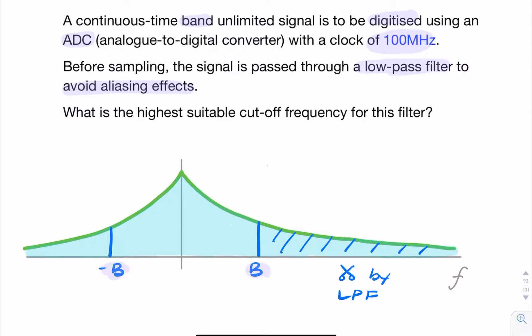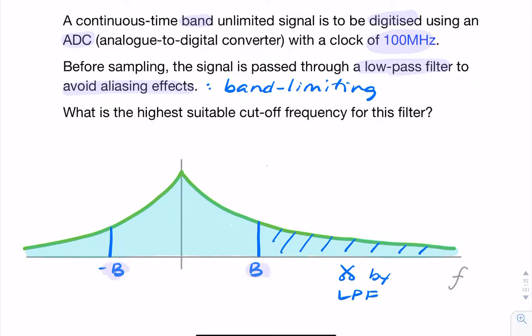This process is called band limiting. We started with a band unlimited signal, and now we are band limiting it.